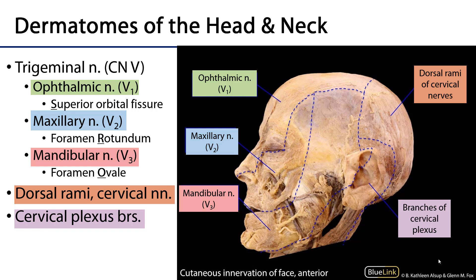Here you're looking at a left lateral view of a head, and the blue dotted lines represent the boundaries between the various dermatomes of the head. A dermatome is a region of skin which is afferently served by a single nerve, and it's worth noting that there is some overlap between sensory innervations of adjacent dermatomes.